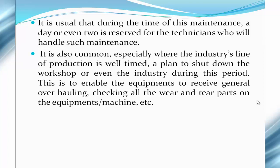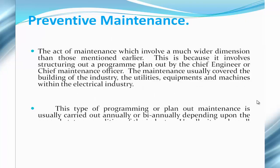Especially where the industry's line of production is well-timed, a plan to shut down the workshop or even the industry during this period is usually made. This is to enable the equipment to receive a general overhaul and to check all the wear and tear parts on the equipment as well as the machines.